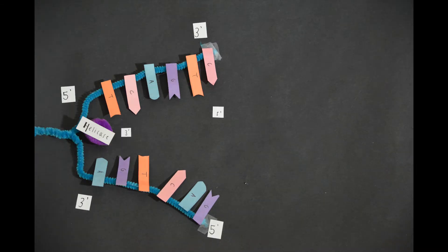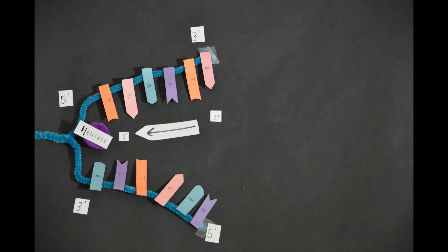An important aspect of the DNA replication process is the anti-parallel structure, meaning that the direction of replication is opposite for each strand.